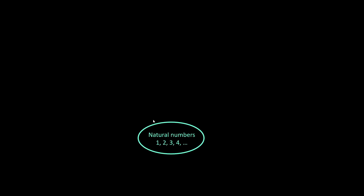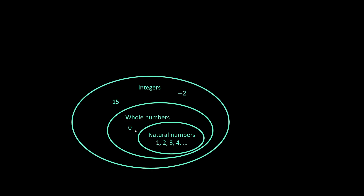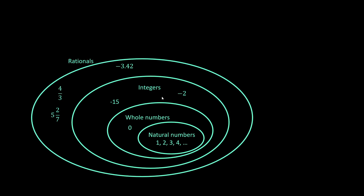We know our natural numbers — they're the counting numbers: 1, 2, 3, 4, and so forth. They are part of the whole number set, which includes all the counting numbers and zero. We go further and we have integers, which includes negative numbers as well. And we also have rational numbers — numbers that can be made up of a ratio of two integers. For example, 4 over 3 is a rational number.